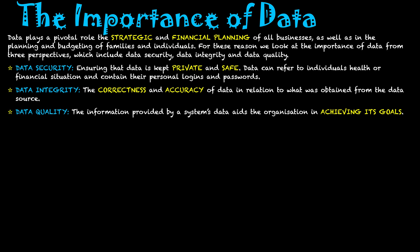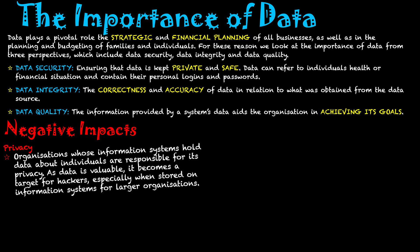So those are the three areas that reflect the importance of data. Now let's look at the potential negative sides to this. The first is privacy. Organizations whose information systems hold data about individuals are responsible for its privacy. As the data is valuable, it becomes a target for hackers, especially when stored on information systems for larger organizations. We do hear in the news of certain systems being targeted at big businesses — a breach in their security — because these systems hold people's financial data and personal data that can be used for theft, both of identity and of finances. So it is extremely important that privacy is kept safe.